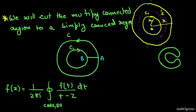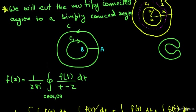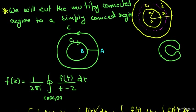We take the multiply connected region and make a cut AB so it becomes a simply connected region. Then by the Cauchy integral formula, F(z) equals 1 upon 2πi times the integral along the curve constituted by C, AB, C1, and BA of F(t)/(t minus z) dt, where F(t) is the function on the gamma curve encircling C1.